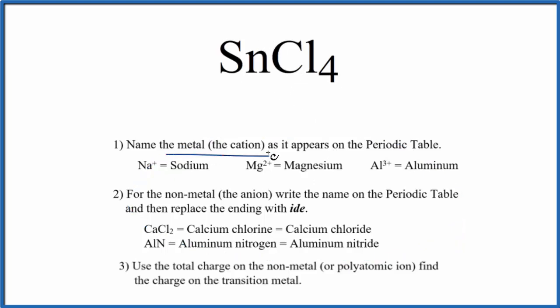First, we write the name for the metal as it appears on the periodic table. That's Sn, which is just tin. Next, we write the name for the non-metal as it appears on the periodic table. So Cl is chlorine. Then we replace the ending with ide.